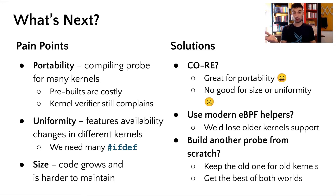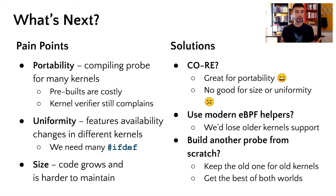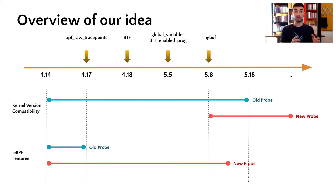So what can we do? Should we go for CO-RE? Well, maybe yes, because CO-RE definitely will help with our portability problem. However, that will not be enough to solve our uniformity and code size issues. Should we start using the newest eBPF helpers and tools? Sounds great on paper, but then supporting older kernels will become even more troublesome. So maybe we should rewrite everything from scratch? This sounds like a joke, but it's actually a good solution. We can keep our current eBPF probe for supporting older kernel versions and also have a new probe for only the newest kernels that will benefit from the latest cutting-edge eBPF features. Sounds like tons of work, but also a win-win situation.